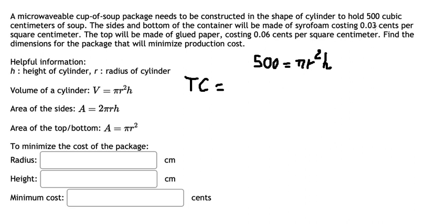So we put 0.03, we multiply by the side and the bottom in here. And the top, that is about 0.06. That is this one.